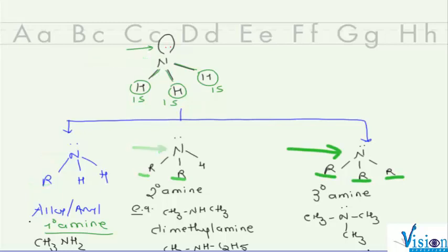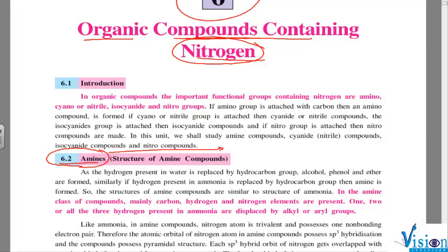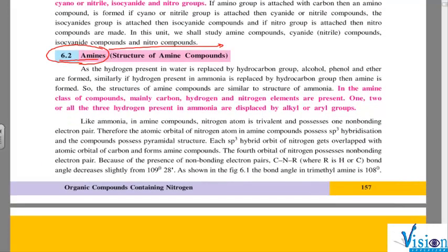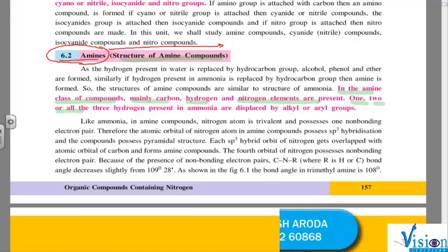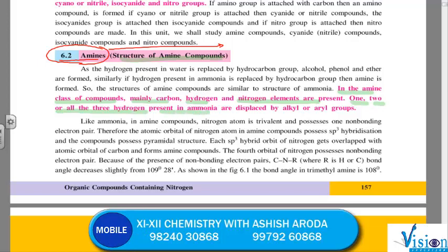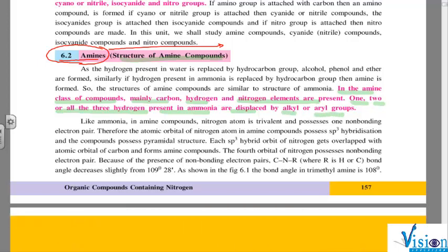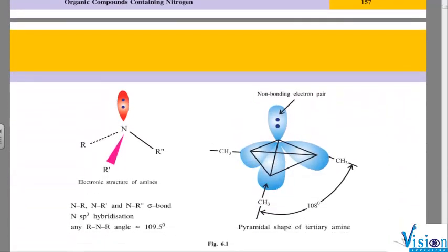Let's see what your textbook says. The first topic in the textbook says Structure of Amine Compounds. In the amine class of compounds, mainly carbon, hydrogen and nitrogen elements are present. In amines, nitrogen, hydrogen and carbon normally are present. One, two, or all the three hydrogens present in ammonia are displaced by either alkyl group or aryl groups. Depending upon how many hydrogens are replaced or displaced, we call them primary, secondary and tertiary.